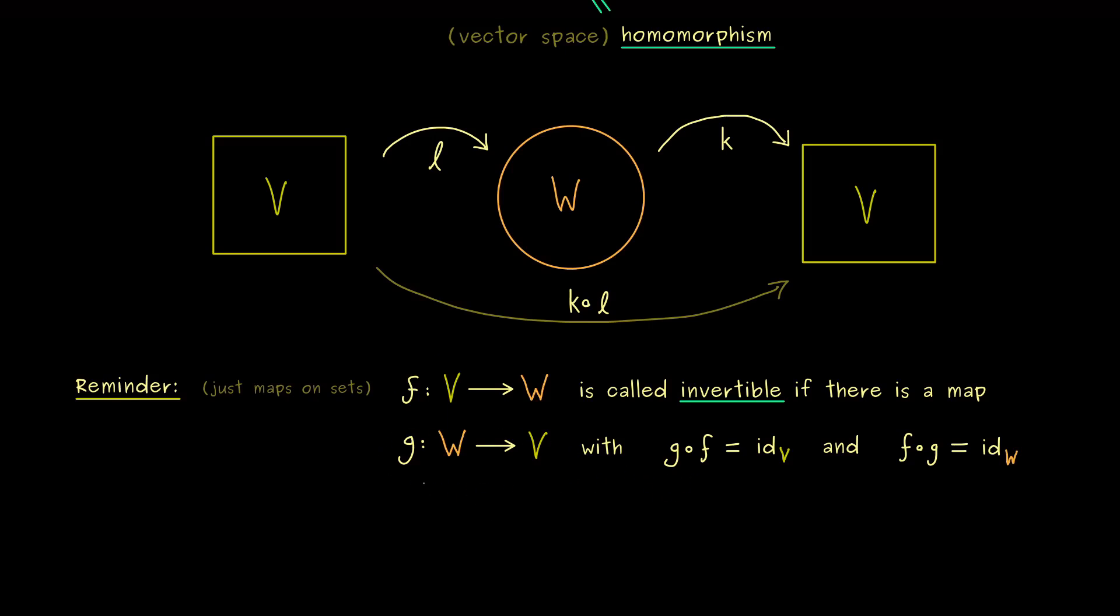So if f is invertible, then there is only one map g. And usually then it's denoted by f to the power minus 1.